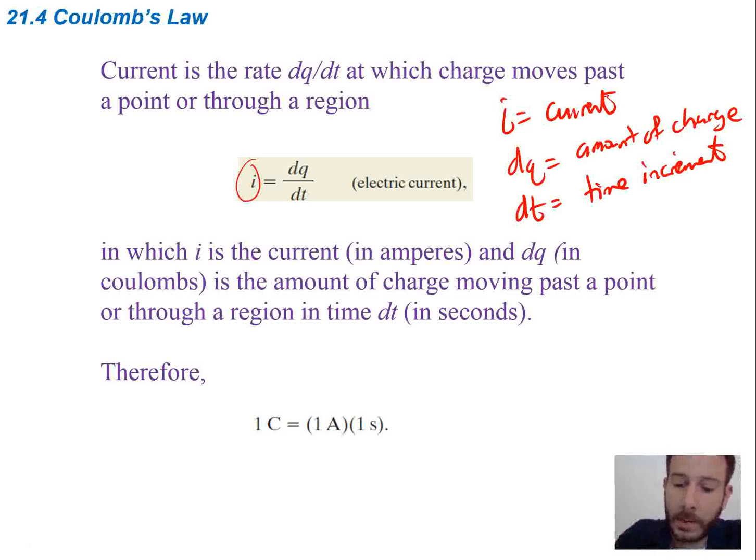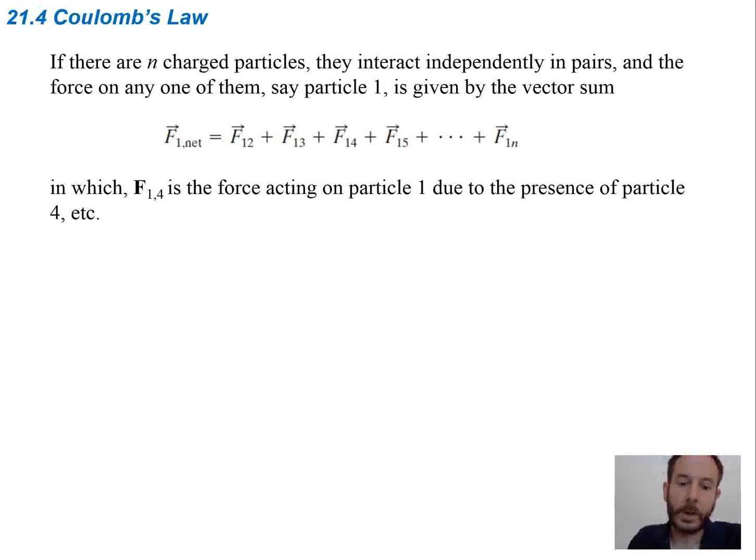With this equation, we know that q is going to be in coulombs, which is going to be denoted by c. Current is going to be in amperes, which is denoted by a. And then time we'll obviously use in seconds. So if you want to know what a coulomb is, well, we can say that it's amp seconds. So one coulomb is one amp times one second.